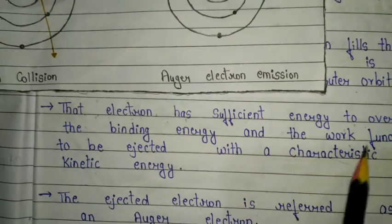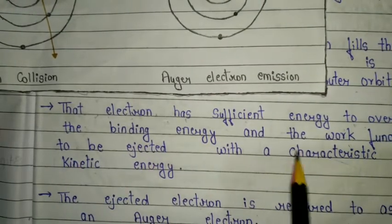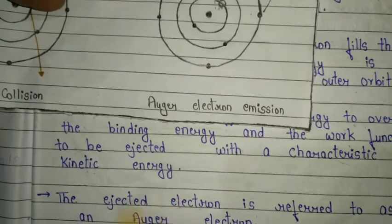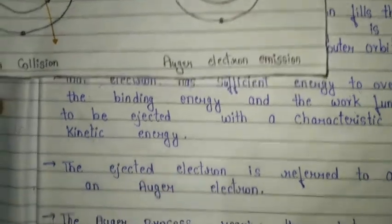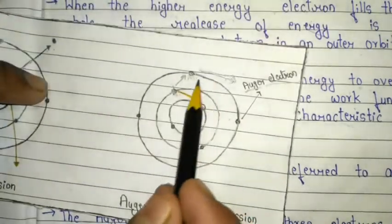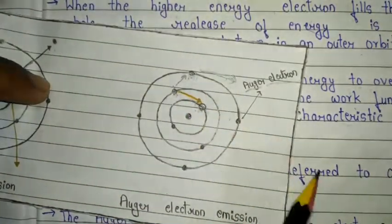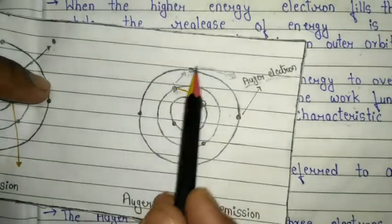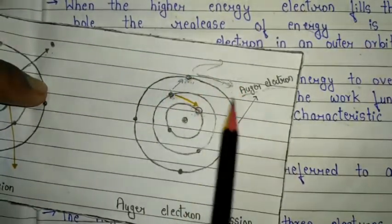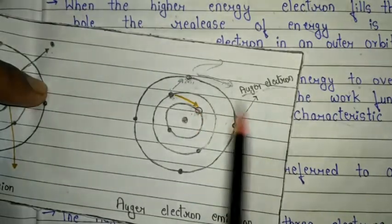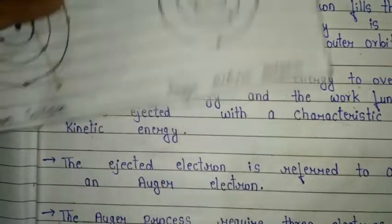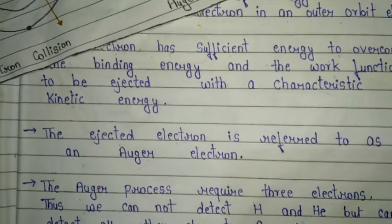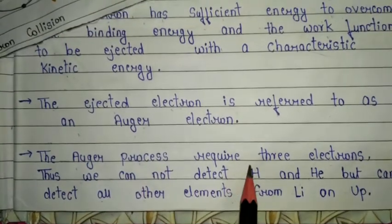That outer orbit electron has sufficient energy to overcome the binding energy and the work function, and is ejected with a characteristic kinetic energy. The electron which is removed from the atom is called the Auger electron.